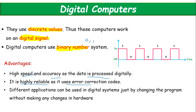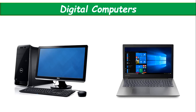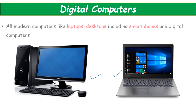The digital computer is the computer that we use today. If you want to add any app or application, you don't need to change your hardware. For example, on a mobile device, you don't need to change your hardware requirements — you can install your software and use it. So this is a digital computer that we use. Examples are your desktop, laptop, and smartphone — these are all digital computer examples.